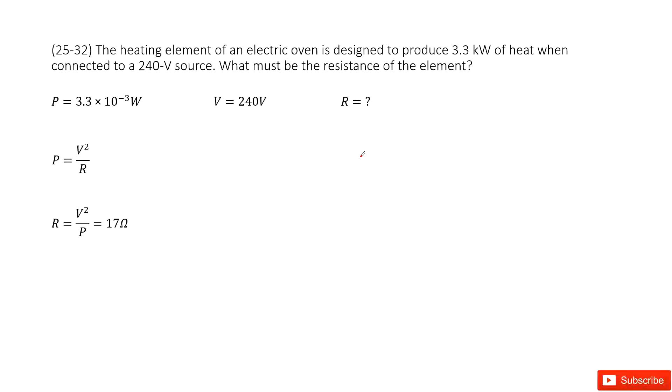So we look at the heating element of an electric oven. We know the power for this element is about 3.3 kilowatts. So you write it there and convert the unit kilowatt to the international system unit.